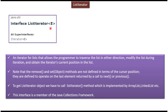List Iterator is an interface and it belongs to the java.util package. The super interface for List Iterator is Iterator. Using List Iterator we can traverse the list in forward direction and reverse direction. During iteration, if you want to add a new element, remove an element, or replace one element with another, it is possible using List Iterator. To get a List Iterator object, we have to call the listIterator method which is available in ArrayList and LinkedList. List Iterator is a member of the Java Collection Framework.